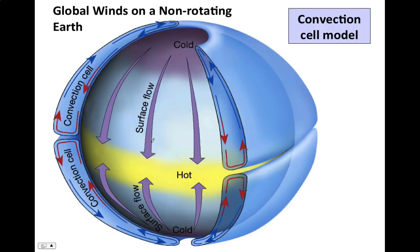This diagram shows what our global wind pattern would look like if Earth did not rotate at all. Notice that the surface wind would travel in straight lines because there is no Coriolis effect. Warm air at the surface, due to direct sunlight, creates a low pressure area. Cold, denser air at the poles would create a high pressure area. Wind always travels from high to low pressure, so wind would always travel from the pole towards the equator. We would have two massive convection currents in our atmosphere.